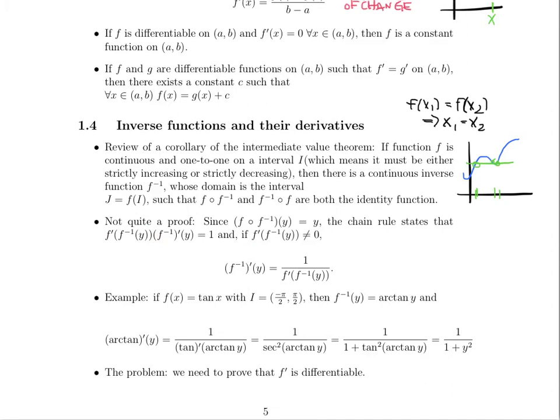Remember, we take the derivative of the outside function times the derivative of the inside function, and then the derivative of y with respect to itself is just one. And f'(f⁻¹(y)) is not equal to zero, specifically this term right here. We can divide by this term and find that the inverse function's derivative at the point y is equal to one divided by f'(f⁻¹(y)).